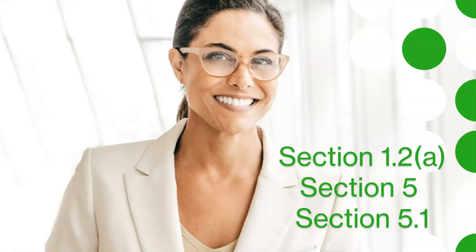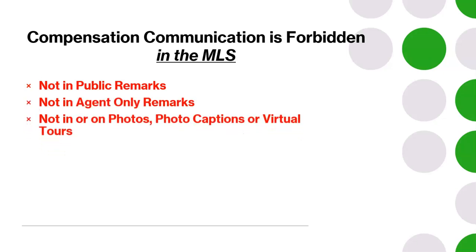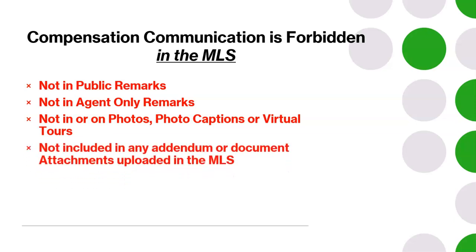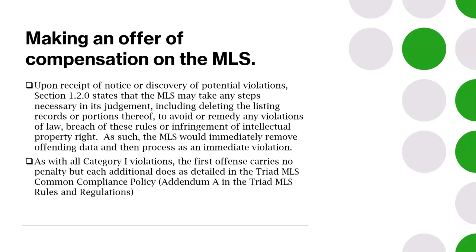Sections 1.2a, 5 and 5.1: compensation is forbidden in the MLS. References to cooperating compensation cannot be included on any listing using the public remarks section, agent-only remarks, not in or on photos, in the photo captions section, or virtual tours. Compensation information cannot be included in any addendum or document uploaded in the MLS. Cooperating compensation cannot be funneled through any third-party service using Triad MLS, including but not limited to showing time, showing time's office manager system, or savvy card. Upon receiving notice or discovery of potential violations regarding offering compensation in the MLS, steps will be taken to remove any information considered unlawful, breach of the rules, or infringement of intellectual property rights. These compensation rules are also Category 1 violations. The first offense carries no penalty, but an additional offense does as detailed in the Common Compliance Policy Addendum A.